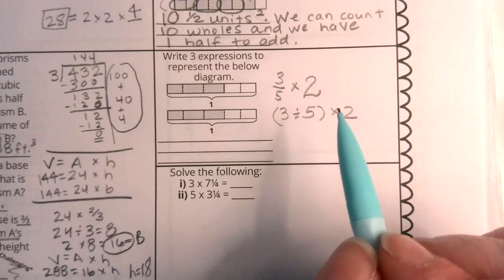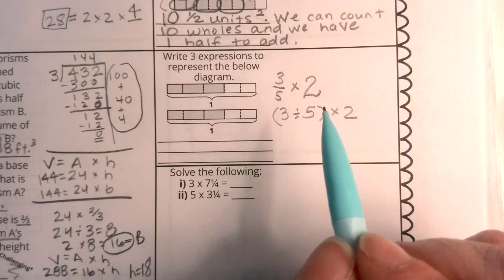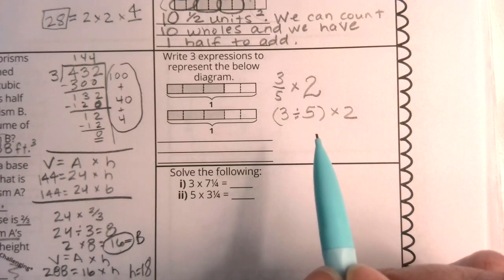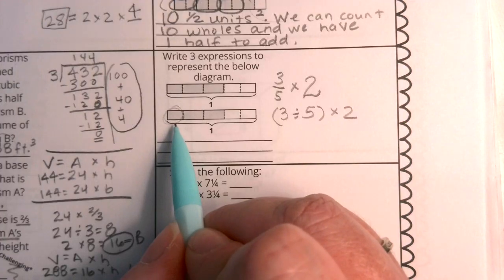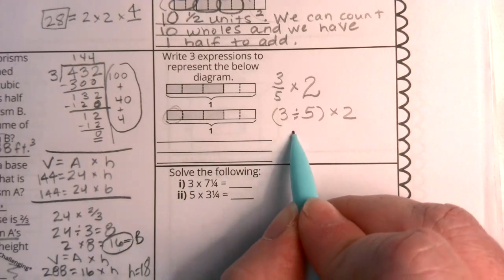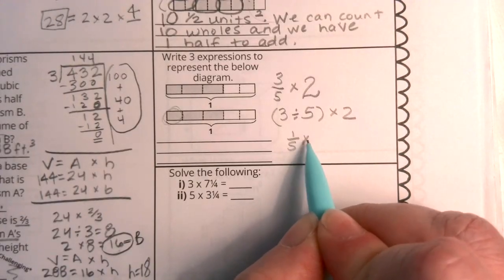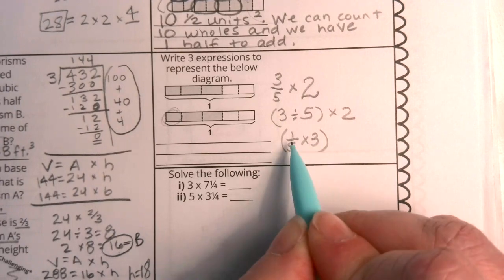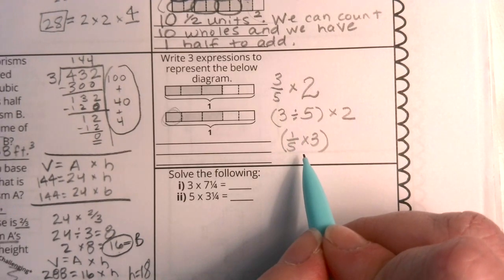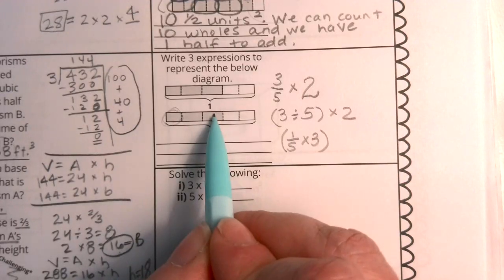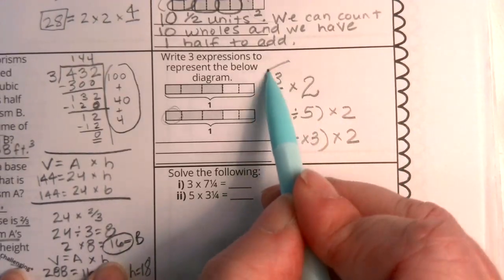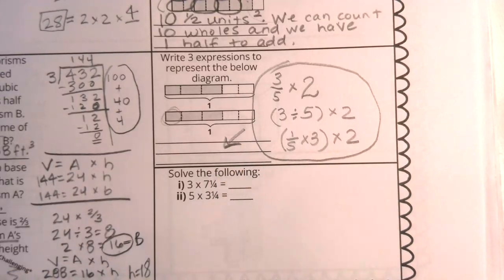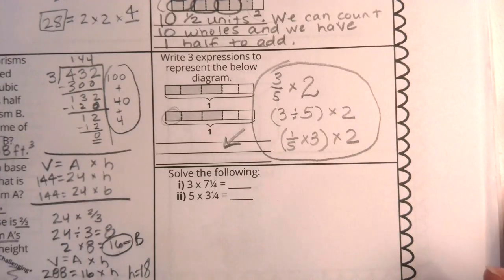Another way that I could show this that I haven't seen as much from our students, but certainly this is something good to take a look at. If I consider one of these, one of these is one-fifth. So, I could say that one of the shaded areas is a fifth, and in each of my wholes, I actually have three of them. This still would get me to the idea of three-fifths. But, it's looking at this particular one is a fifth, and I have three of those in a whole. And, how many of those wholes do I have? I have two. So, again, these are three expressions that all work. I didn't write them on the answer line because I wanted to make them nice and big so that you could write along with me. But, there are three expressions that we, for sure, can record.